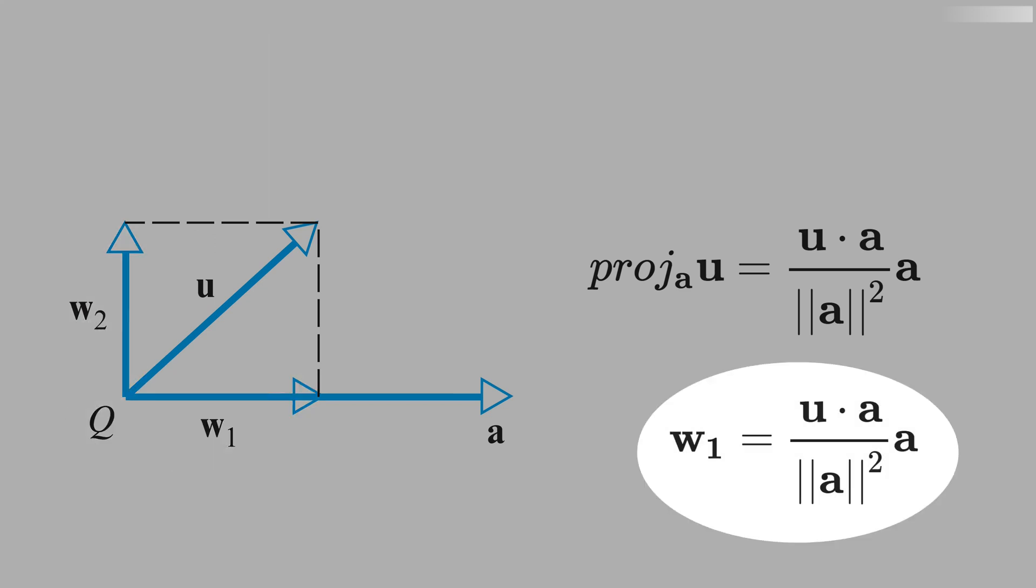See in the formula that w1 is just a function of u and a, and not w2, because w2 is orthogonal to w1.